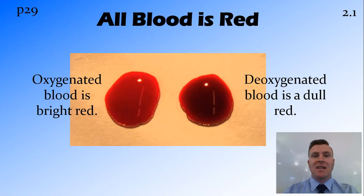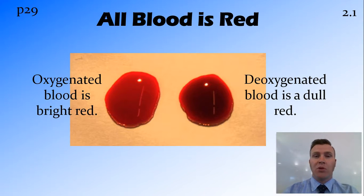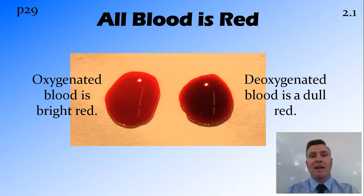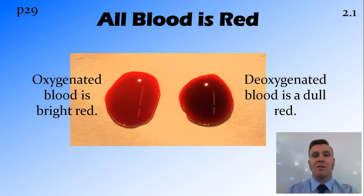All blood is red. You're probably thinking that in the textbook the blood in the veins is blue — but no, all blood is red. It is drawn blue in textbooks so you can work out where the oxygenated blood and deoxygenated blood is. Oxygenated blood is a bright red colour, and deoxygenated blood is a dark red colour. In a diagram it would be confusing if there was bright red on one side and dull red on the other, so we use blue to show the deoxygenated blood.